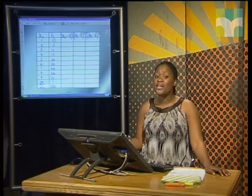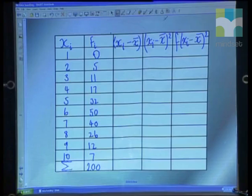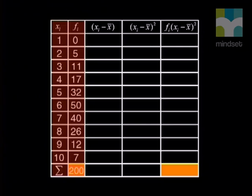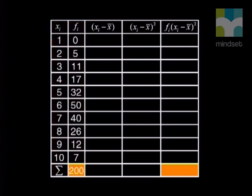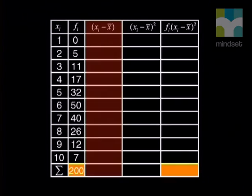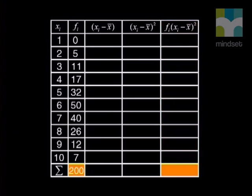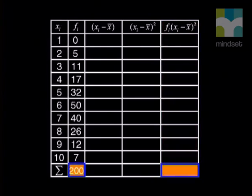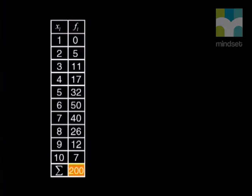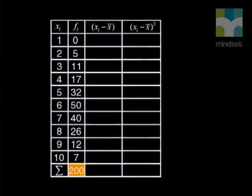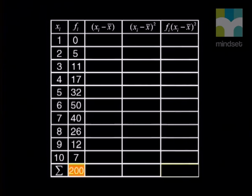When calculating standard deviation it's easier to use a table to prevent mistakes. The table captures: the value or score, the frequency, the difference between the actual value and the mean, the square of that difference, and the product of frequency and squared difference. In the bottom row we sum the second and last columns to get the two values needed to solve for standard deviation. Using the mean of 6 we worked out, we fill in columns three, four, and five, then add up the necessary columns.